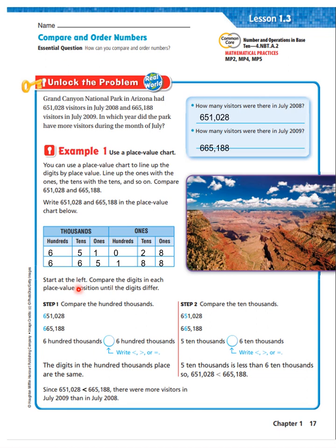Well, we can use a place value chart like this and line up the digits. Hundred thousands, ten thousands, ones, hundreds, tens, and ones. And we just compare starting from left to right. And what happens is when the digit differs, that's going to tell us what number is greater than the others.